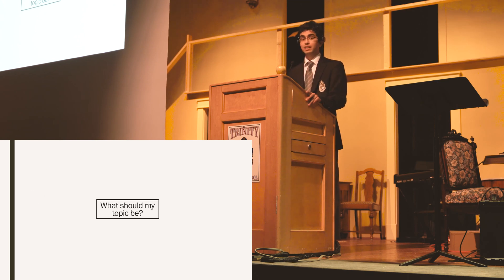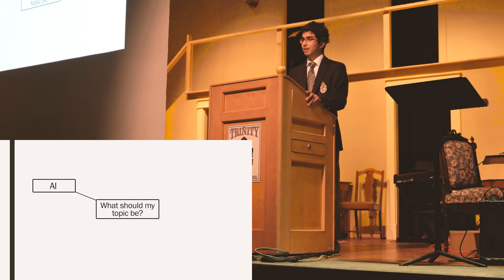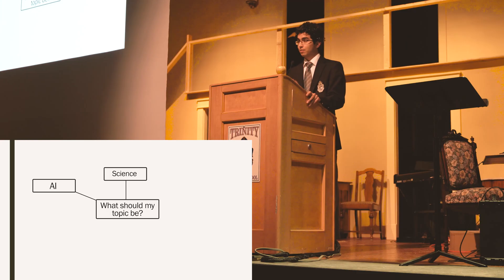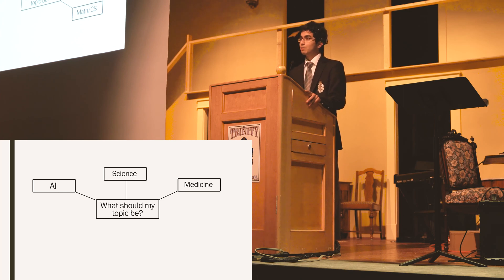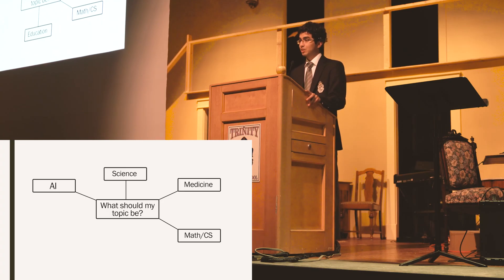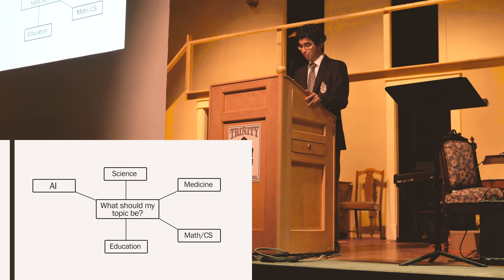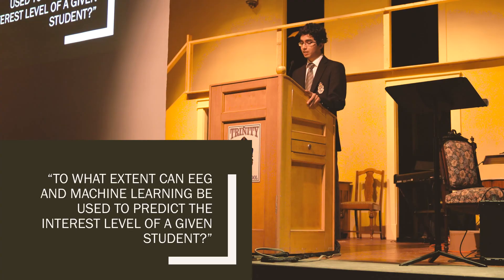The first thing I needed to do was pick a topic. I knew AI was a pretty interesting area - last year I learned about it, and in the summer I did an internship at an AI company. Sciences in general - physics, chemistry, and biology - have always been some of my favorite subjects. Medicine was another option; both my parents are doctors and it's a fascinating field. Mathematics and computer science, education since I'm a student, and psychology have all interested me. Instead of picking just one of these things, I ended up combining them all into my research question.